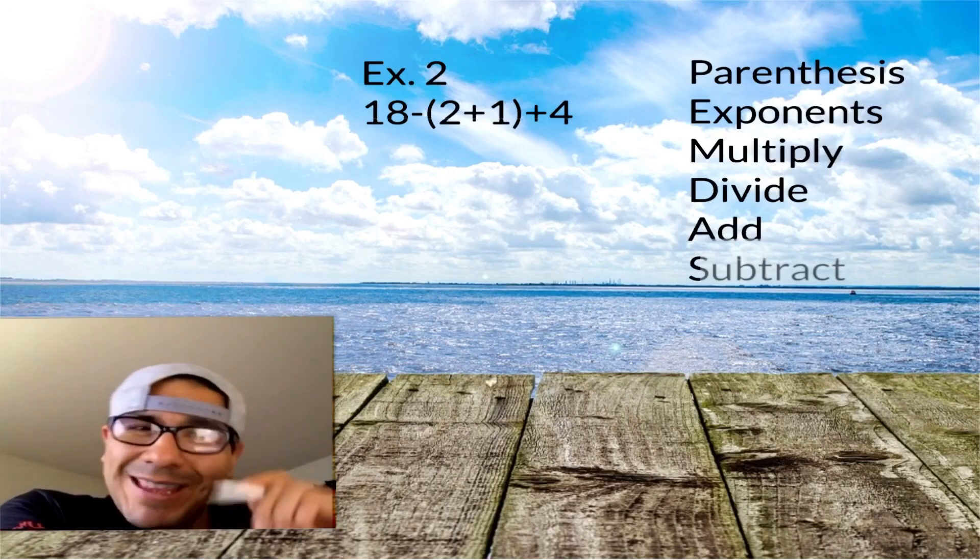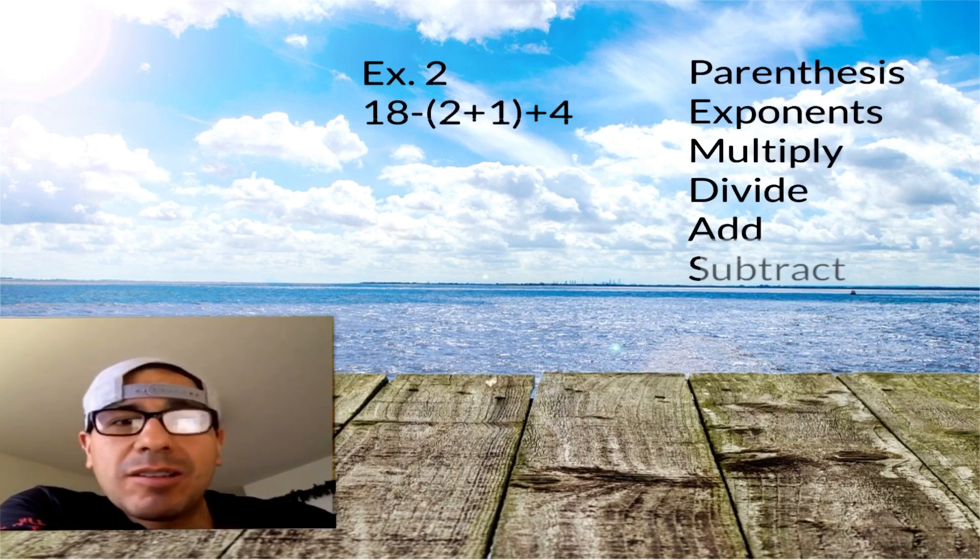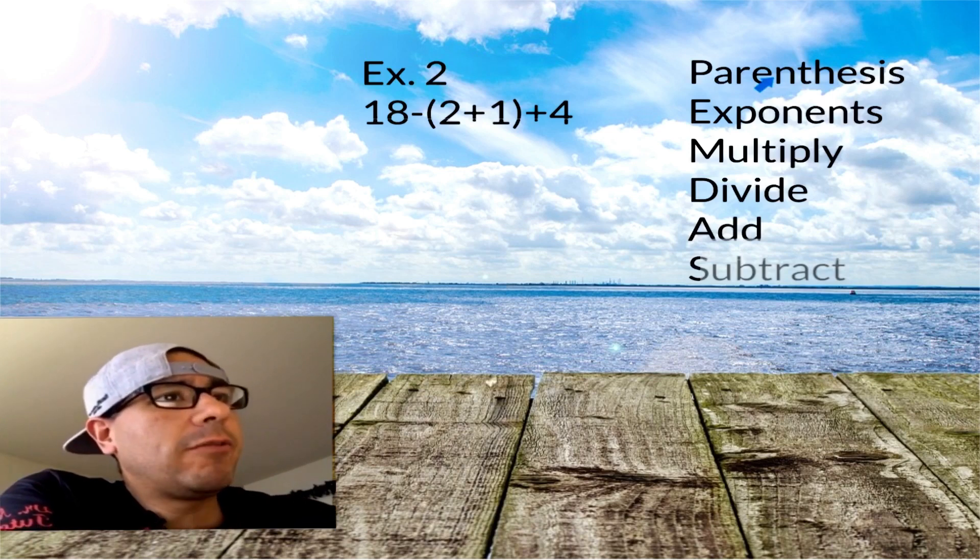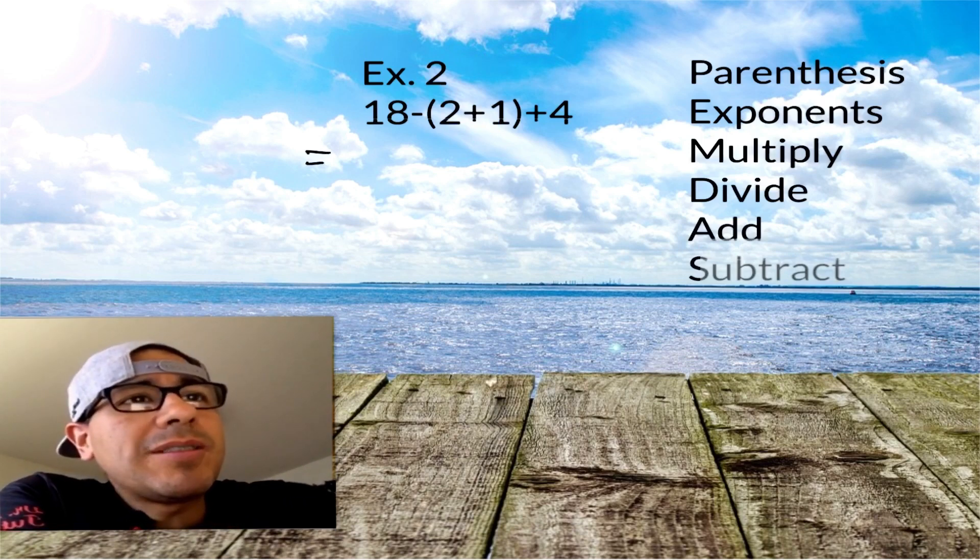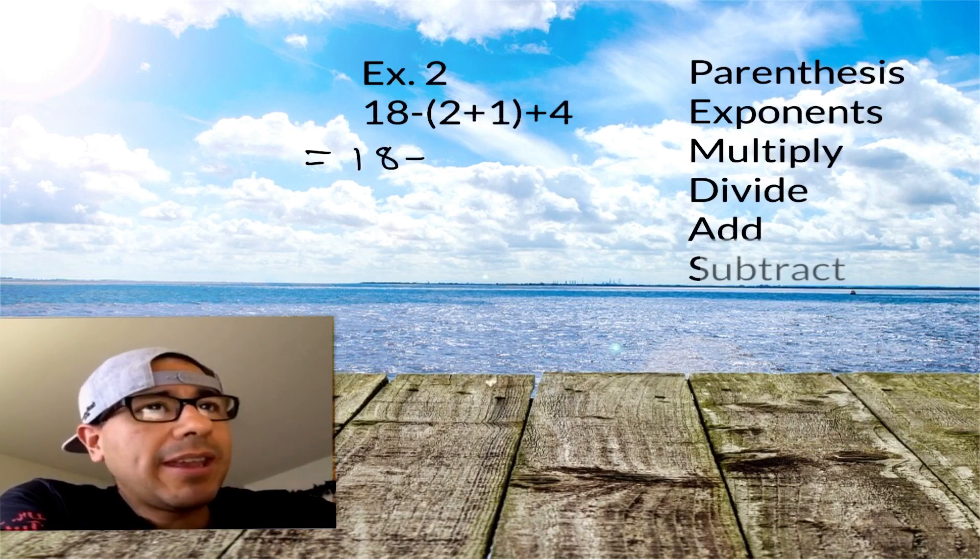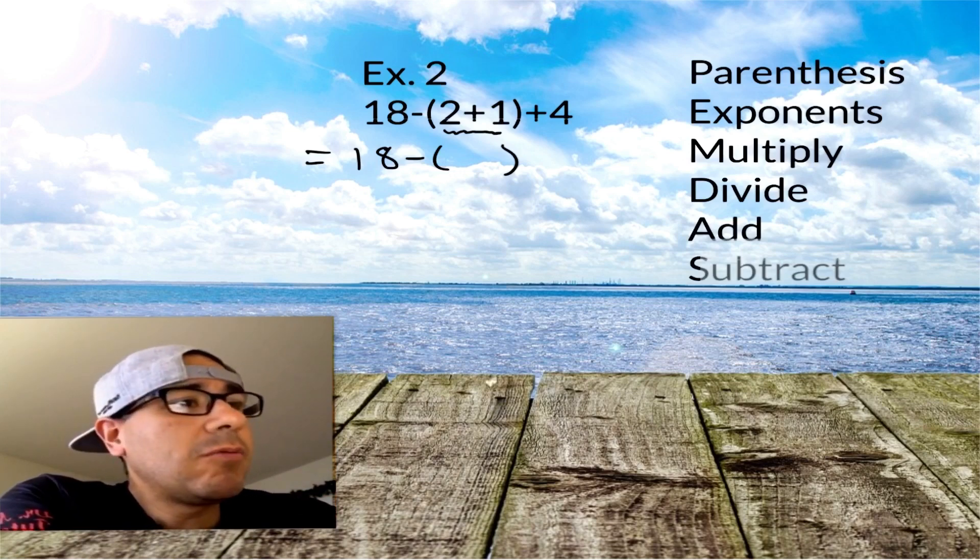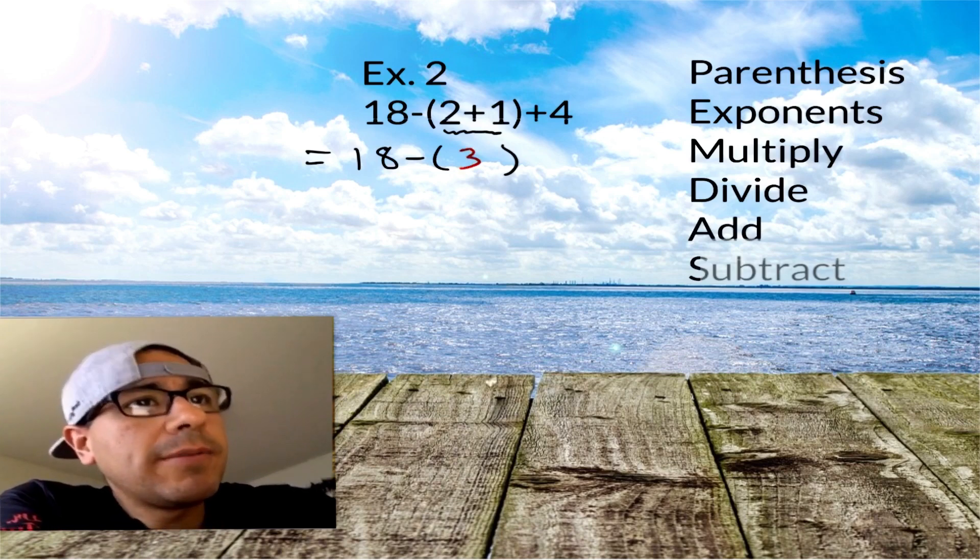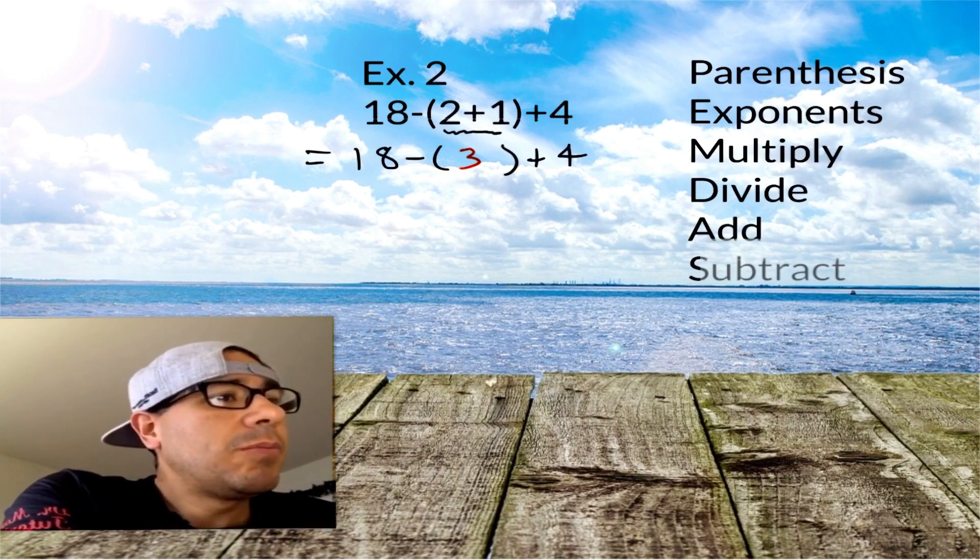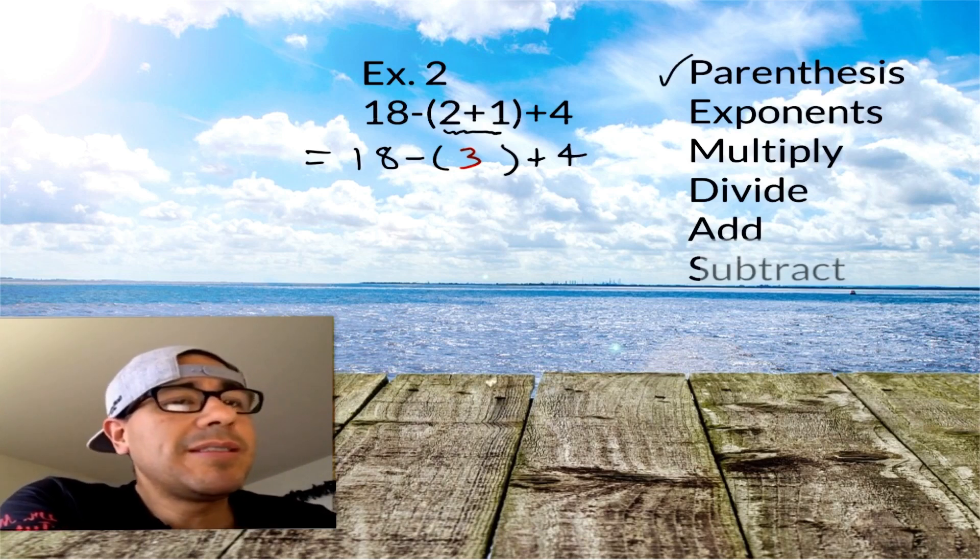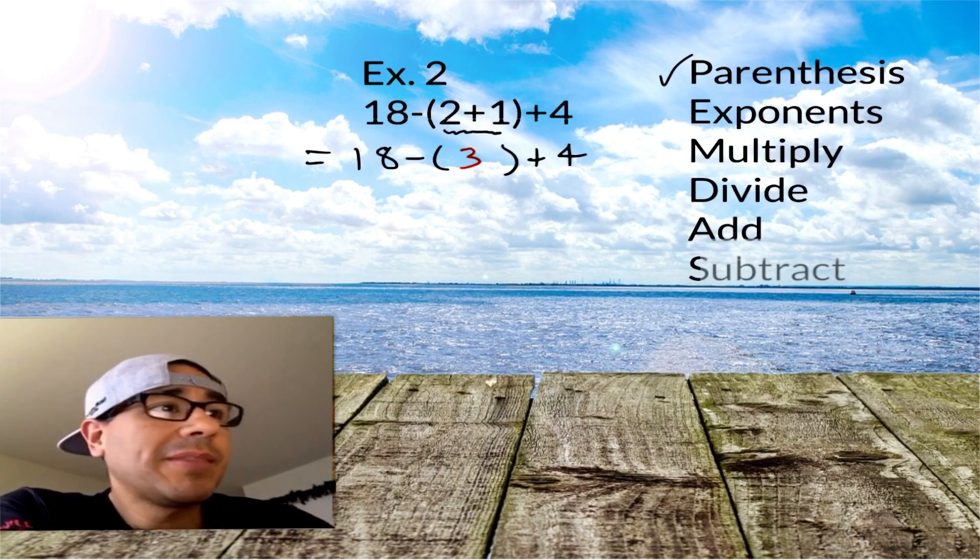Now that we have our order of operations down, let's go through this a little faster. First thing we check for: parentheses. There we go, we have our parentheses, the 2 plus the 1. Everything that we don't touch we bring down, we copy it. The 2 plus the 1 became 3, and then the plus 4 we didn't use so we drop it on down. Parentheses check. Do I have more parentheses? No. Do we have exponents, something raised to some power? No exponents. Check.